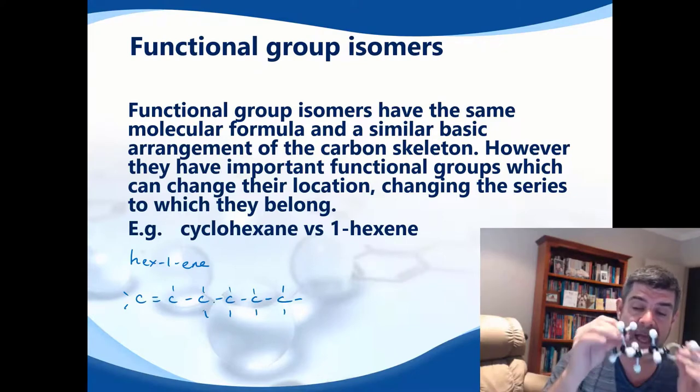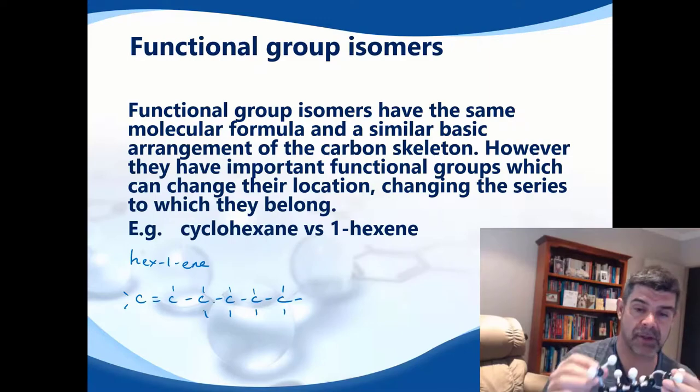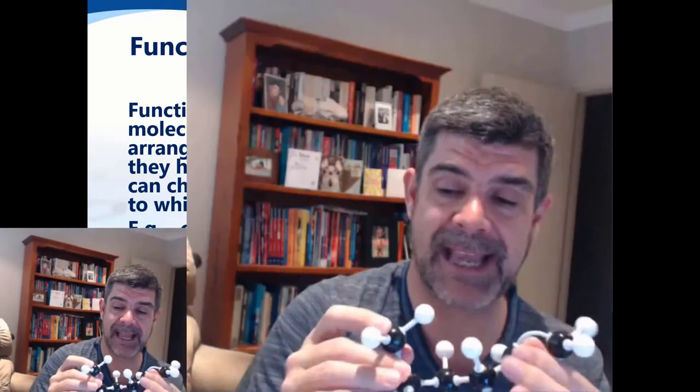What I want to do is create an isomer. To create an isomer, I can't add or subtract any atoms, but I also want to change the functional group. This time, the functional group is a double bond. One of the simplest ways to turn an alkene into an alkyne is to actually break this bond.